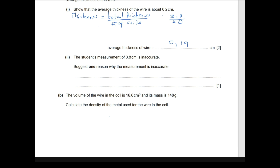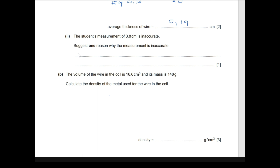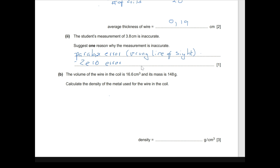The student's measurement of 3.8 cm is inaccurate. One reason is parallax error — this involves the wrong line of sight. When taking a reading, you must be directly perpendicular to the measurement point; being at an angle causes parallax error, which is a random error. Another reason is zero error, which is a fixed error related to the measuring instrument itself.